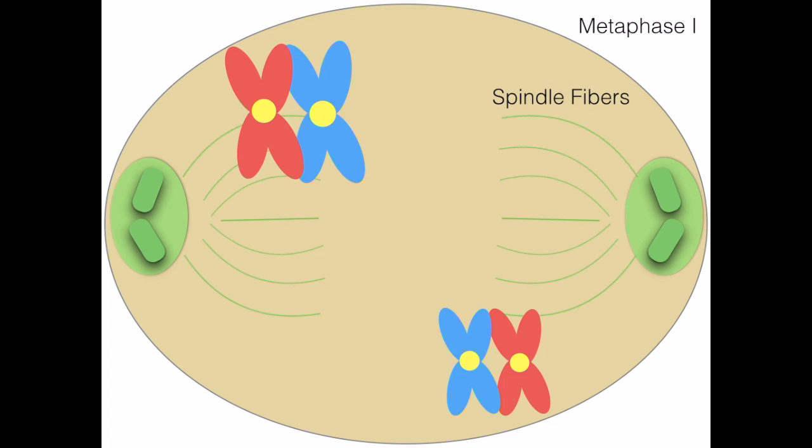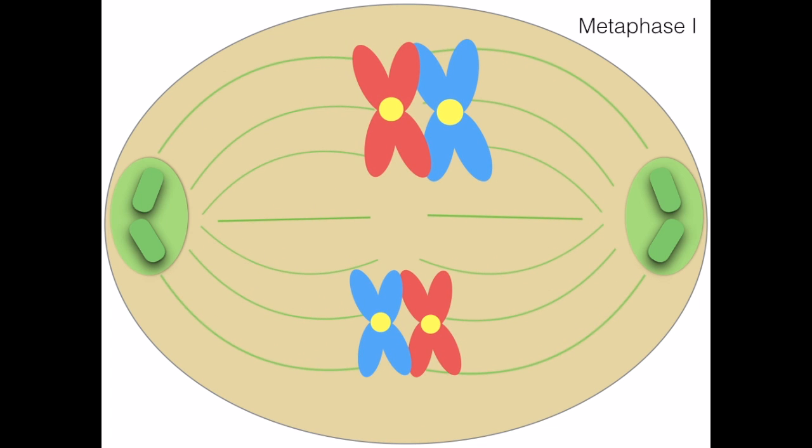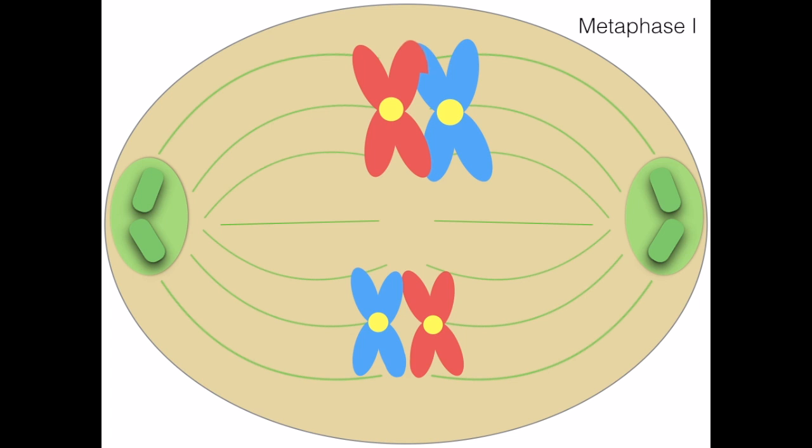During metaphase 1, the chromosomes are moved to the center of the cell. The homologous pairs overlap, and they swap DNA in a process called crossing over.